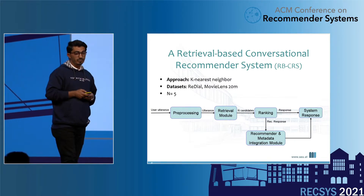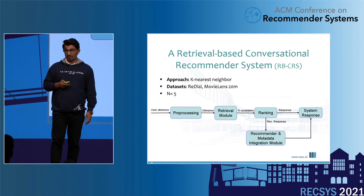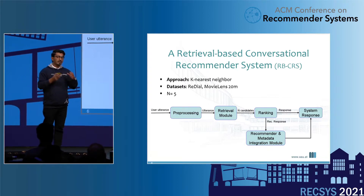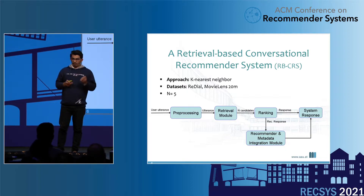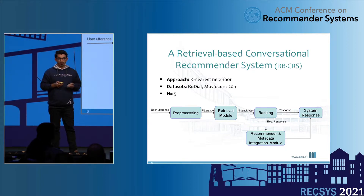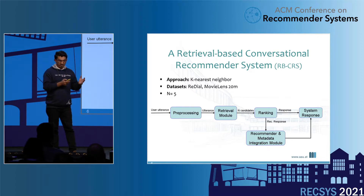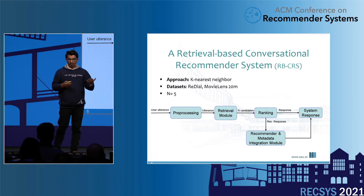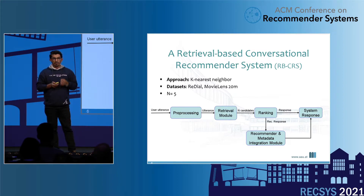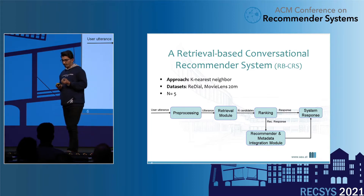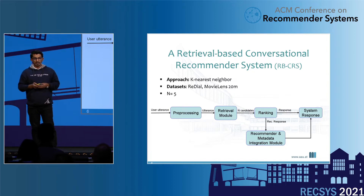We propose a basic retrieval approach for conversational recommendation based on a k-nearest neighbor approach. Given the user utterance, the retrieval module — based on TF-IDF vector models on the ReDial dataset — retrieves similar seeker utterances from the dialogue corpus. These responses then undergo a ranking process to select the best response. Once the best response is selected, the system integrates recommendations and metadata information such as genre, actors, or directors into the response.